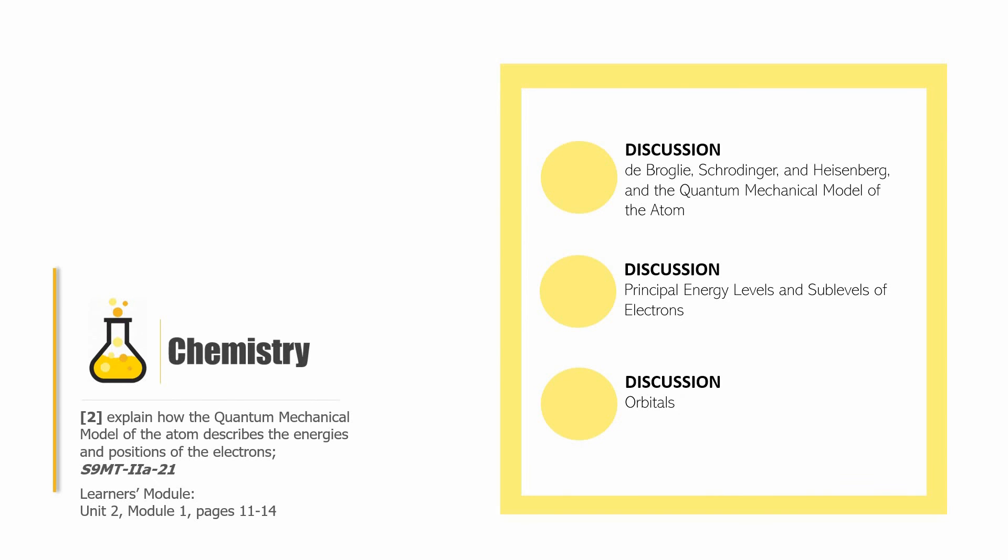Let us now put a formal end to this video. Remember that we are done with the first learning competency, and with this video we were able to discuss something that will be used to further our mastery of the second learning competency, which is to be able to explain how the quantum mechanical model of the atom describes the energies and positions of electrons. If you follow through with your learners module, that's well and good. I hope that I will be seeing you in the next video lesson. This has been Sir CJ, and I hope that you were learning something in the introduction for Grade 9 Chemistry. See you.